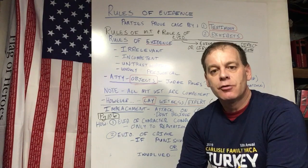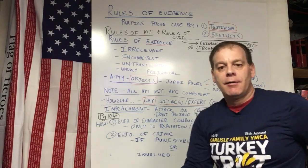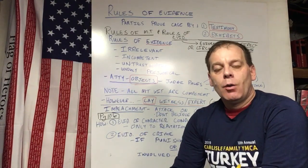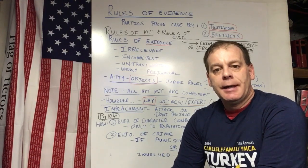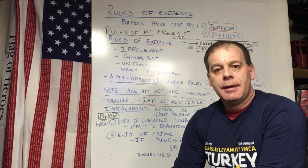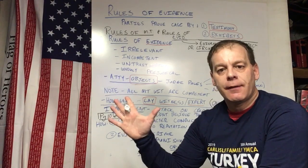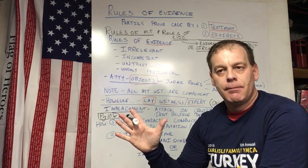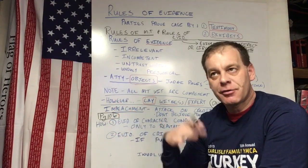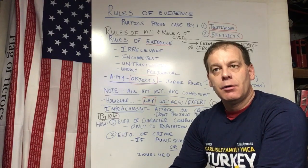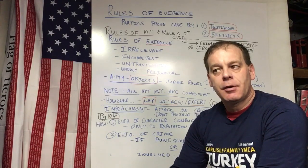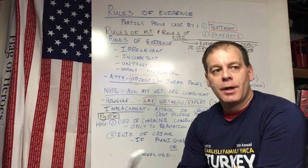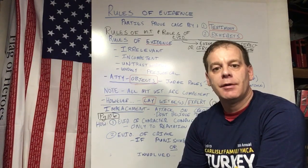Direct evidence would be a witness coming into court and saying, 'Here's a diagram of what occurred, here's what I saw, here is my testimony.' That's all direct evidence that comes from the witness — evidence being heard by the jury.